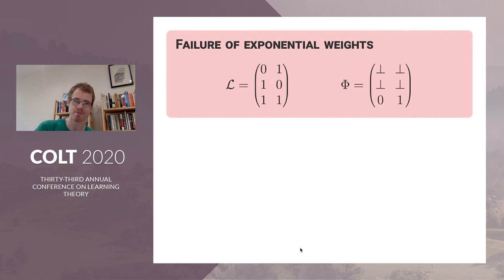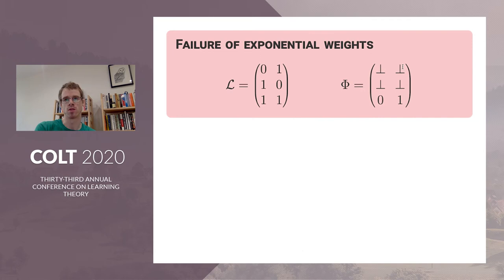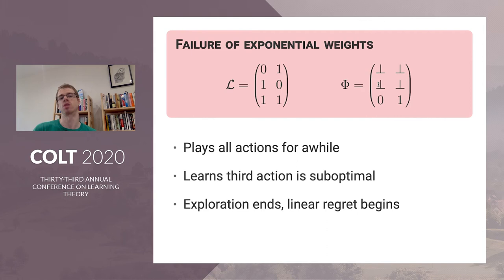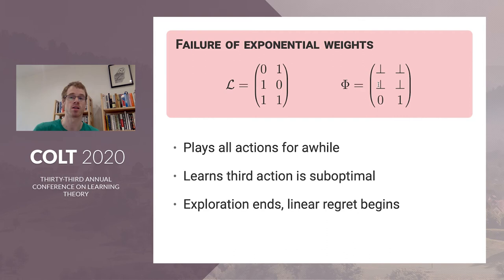Here's a very simple game — the two-matrixes C. It's a three-action, two-outcome game; the learner plays along the rows and the adversary chooses the columns. The first two rows of the feedback matrix are totally uninformative: you get the same signal no matter what the adversary does, so you have to play the third action to gain information. But if you run exponential weights, it plays all actions a little at first, then quickly learns the third action is suboptimal and stops exploring — plays the third action with very low probability. If it hasn't figured out which of the first two actions are optimal, which may be hard because they could be very close, it just suffers linear regret.